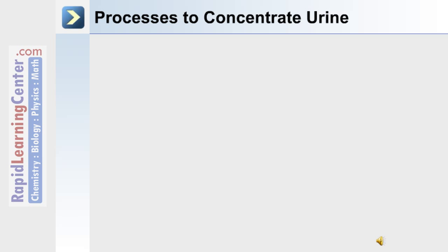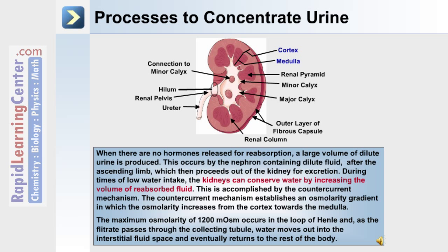When there are no hormones released for reabsorption, a large volume of dilute urine is produced. During times of low water intake, the kidneys conserve water by increasing the volume of reabsorbed fluid. This is accomplished by the countercurrent mechanism, which establishes an osmolarity gradient in which osmolarity increases from the cortex towards the medulla of the kidney. The maximum osmolarity is 1200 milliosmoles, occurring in the loop of Henle. As the filtrate passes through the collecting tubule, water moves out into the interstitial fluid space and is eventually returned to the rest of the body.